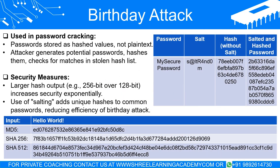This efficient form of attack has a significant impact on the security of cryptographic systems, meaning systems must be designed to withstand attacks even from adversaries with substantial computational resources. For hashing systems, this often means using a hash function that produces a larger hash output. For instance, moving from a 128-bit hash to a 256-bit hash doesn't just double the security — it squares it, because the number of possible hashes doubles with each additional bit, making finding collisions exponentially harder.